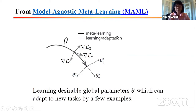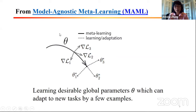MAML is a famous model proposed by UC Berkeley. You are training a meta part — the global parameters theta — and then you will be able to quickly adapt these to different tasks when you have the test case. That is generally the meta-learning approach using the gradient model called MAML.